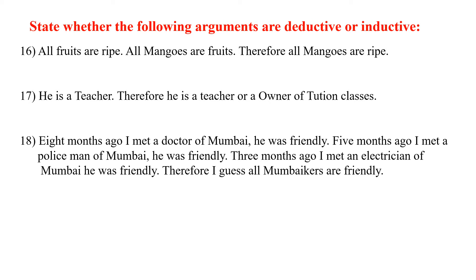Sixteenth one: All fruits are ripe; all mangoes are fruits; therefore all mangoes are ripe. Here the premises claim to provide sufficient evidence for the conclusion, and the conclusion is implicitly present in the premise. So the argument is of deductive type.